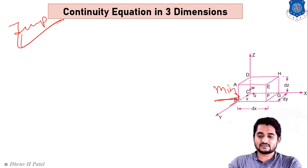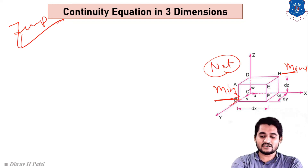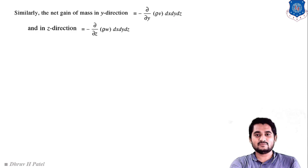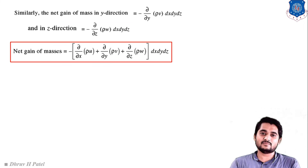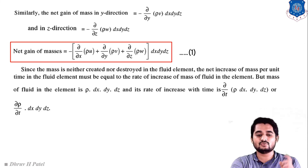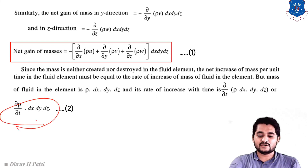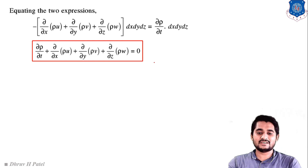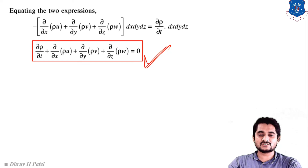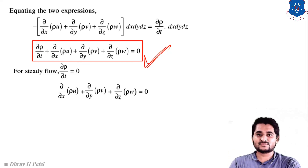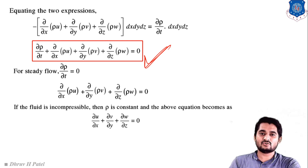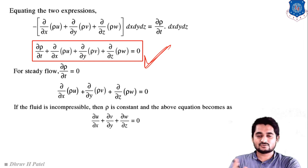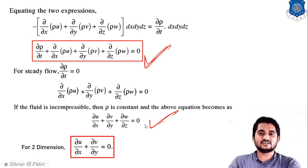For the continuity equation derivation: find inner mass flow rate, then outer mass flow rate, then net gain in mass in the x direction. Similarly find net gain in y and z directions. Compare this total mass flow rate with the increase of mass with respect to time (equation 2). Comparing equation 1 and equation 2 gives the continuity equation for three-dimensional flow. For steady flow, any derivation with respect to time is zero. For incompressible flow, density remains constant and can be taken as common, giving the simplified three-dimensional equation; for two-dimensional flow the z direction term is zero.